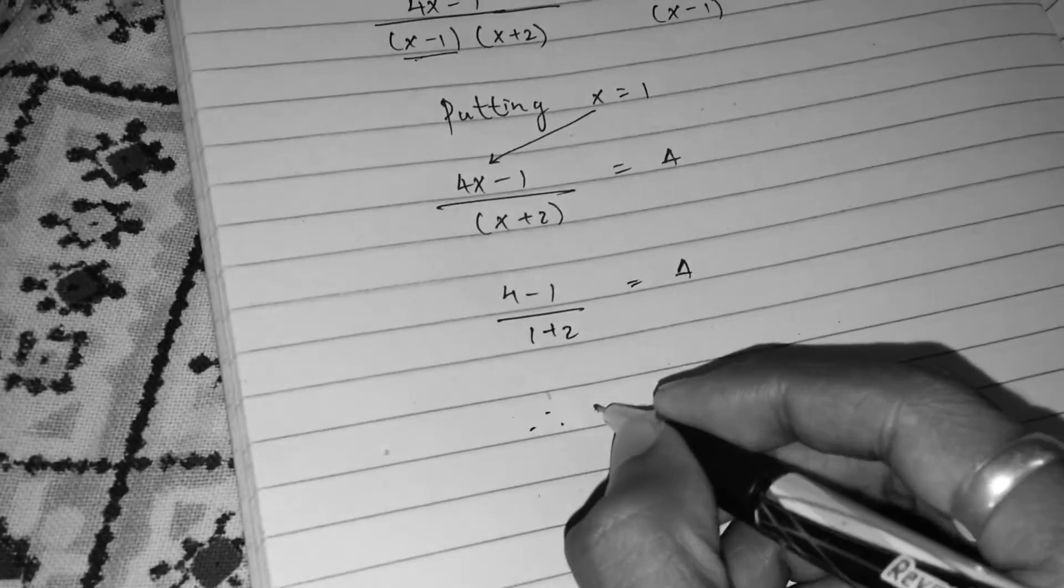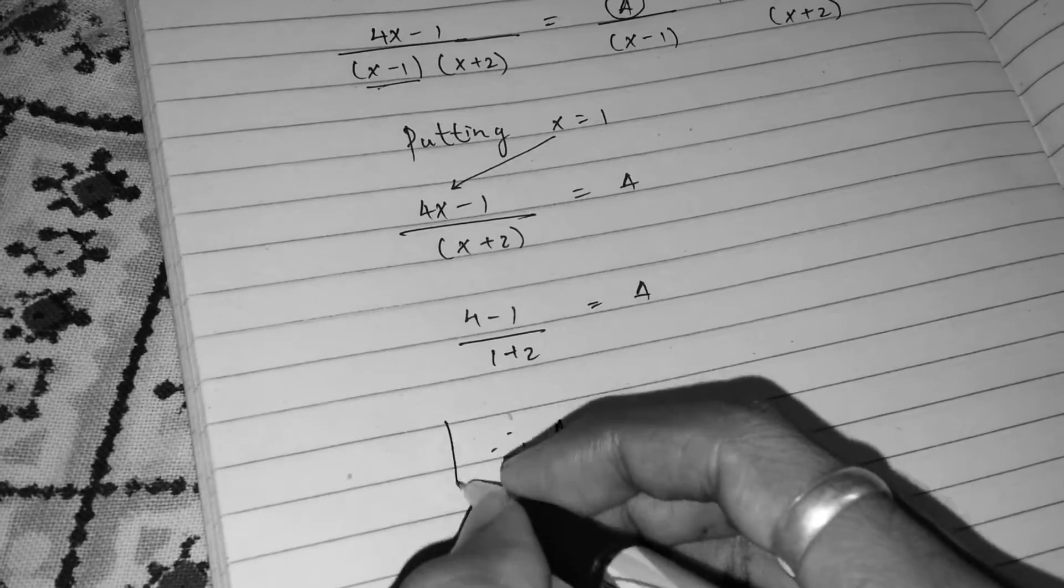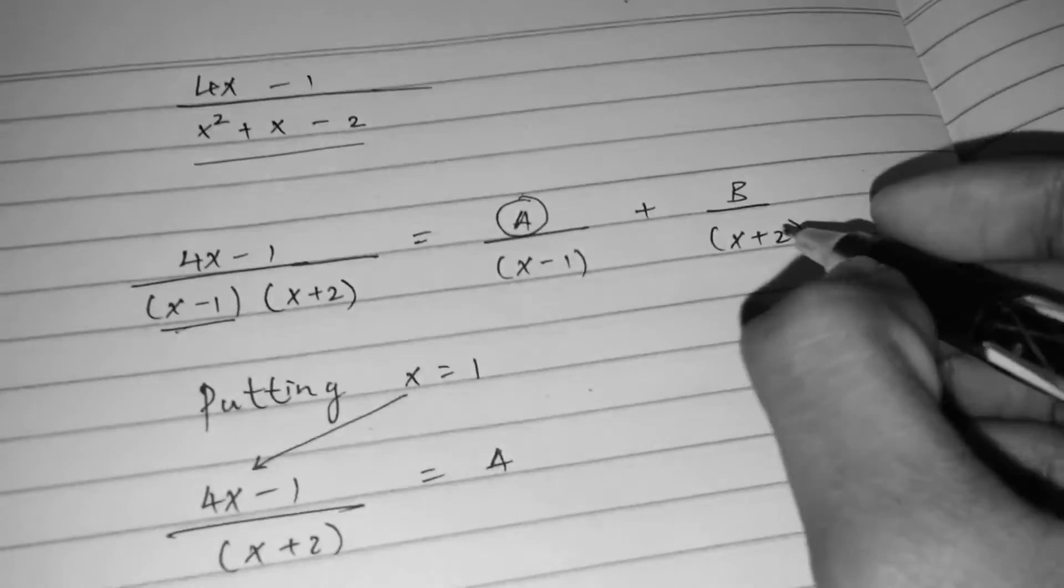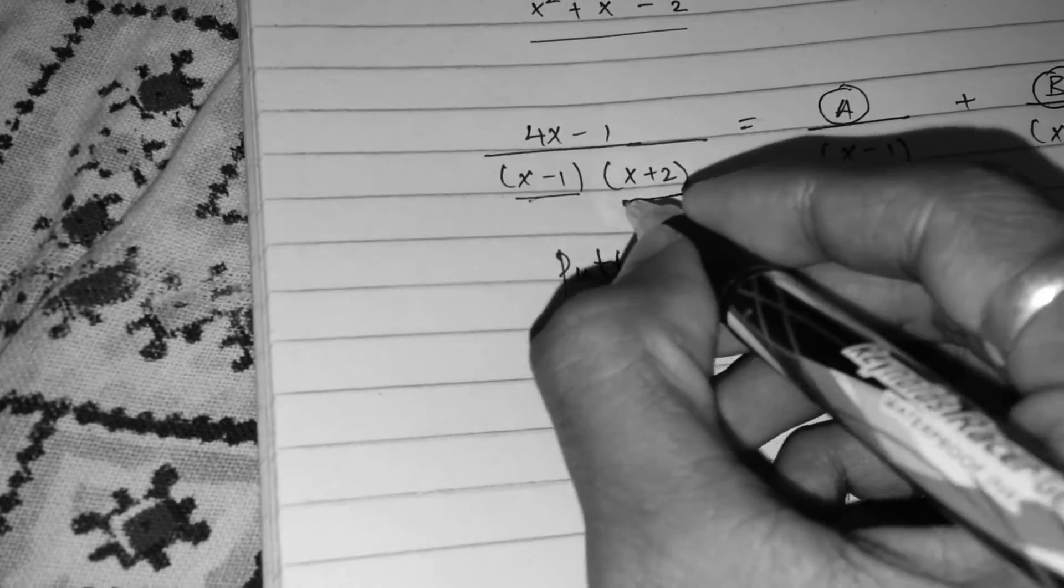Therefore A is equal to 1. So the value of A is 1. And same thing for B also, I will make this term 0 by putting x is equal to minus 2 and I will keep this term as it is.